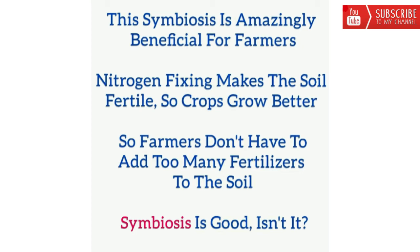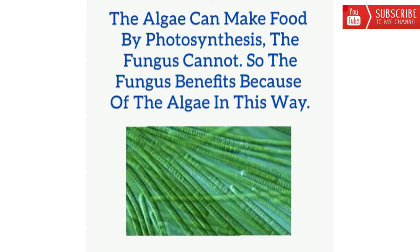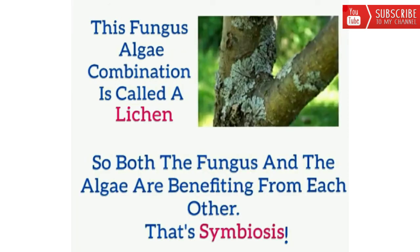Symbiosis is good, isn't it? There is a plant called blue-green algae which lives inside a fungus. The algae can make food by photosynthesis, but the fungus cannot. So the fungus benefits because of the algae. The fungus provides protection to the algae and gathers moisture and nutrients from the environment, providing these things to the algae too. This fungus-algae combination is called a lichen. So both the fungus and the algae are benefiting from each other. That's symbiosis.